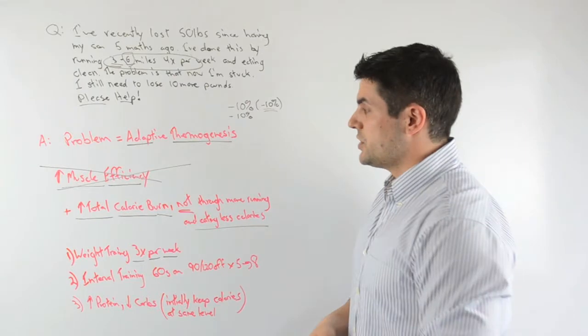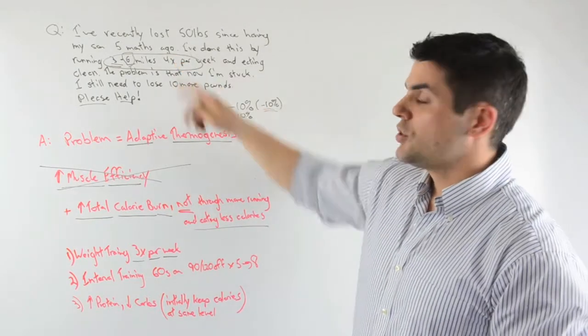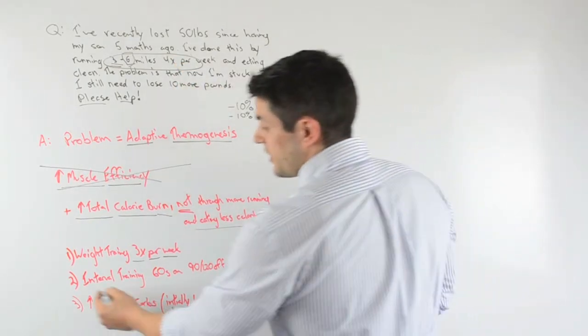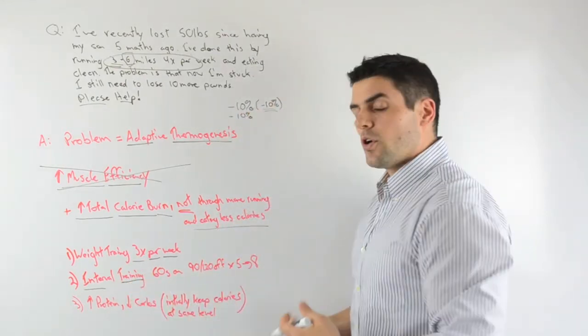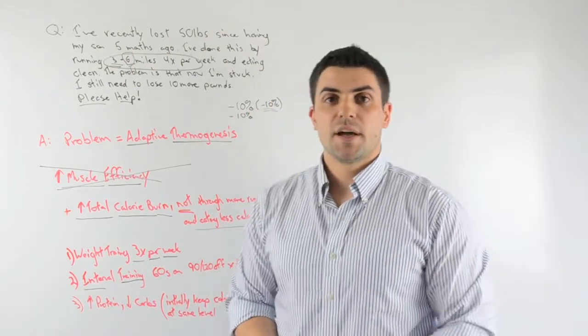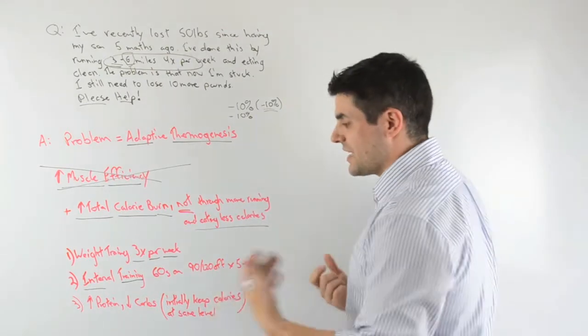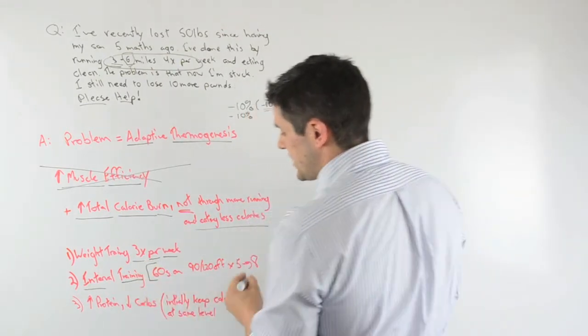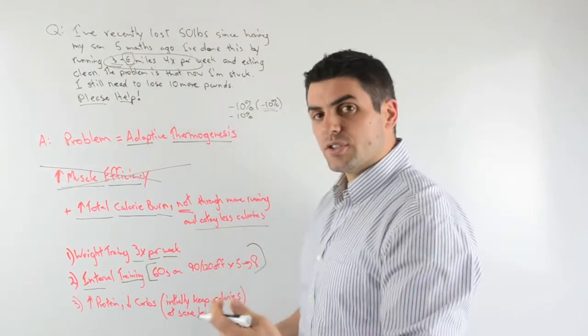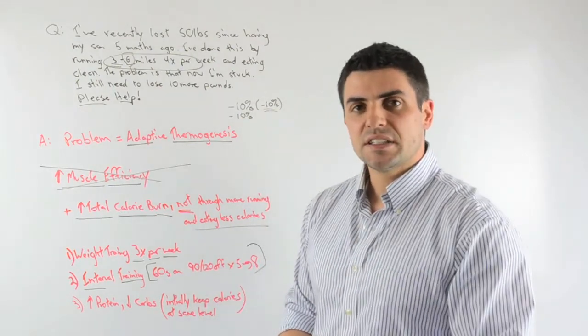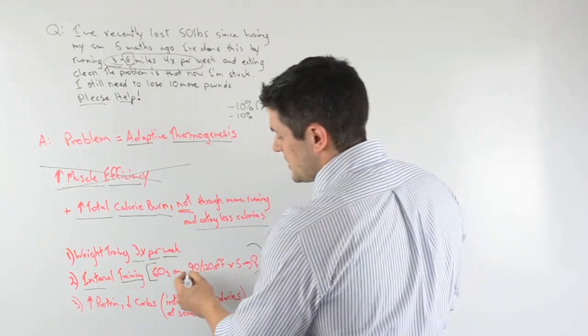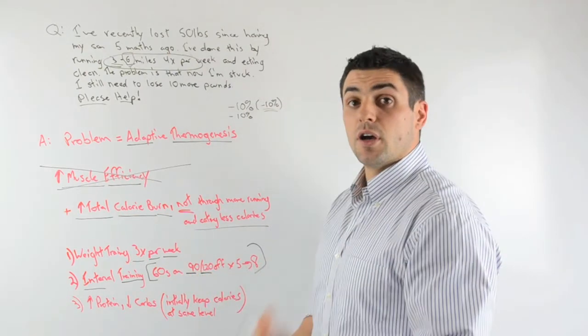The next thing you want to do is trade in your aerobic runs for interval cardio. So interval cardio, again, is going to be very hard for your body to adapt to, and it's very metabolically demanding. So something, an example would be 60 seconds of hard exercise, so you're going really intense for 60 seconds, and then 90 to 120 seconds of recovery.